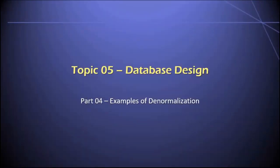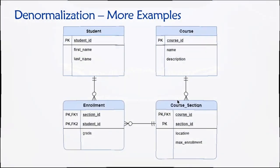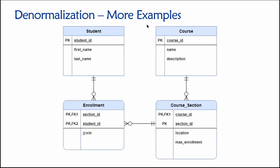Hey everyone, welcome to part four of topic five in our database class. In this video, I'm going to provide several different examples of denormalization. In this case, we'll do it just based on an entity relationship diagram. This is a scenario that is familiar to you, even though perhaps you've never thought of it from a database perspective — an example of how a university might keep track of its students, classes, and enrollments.